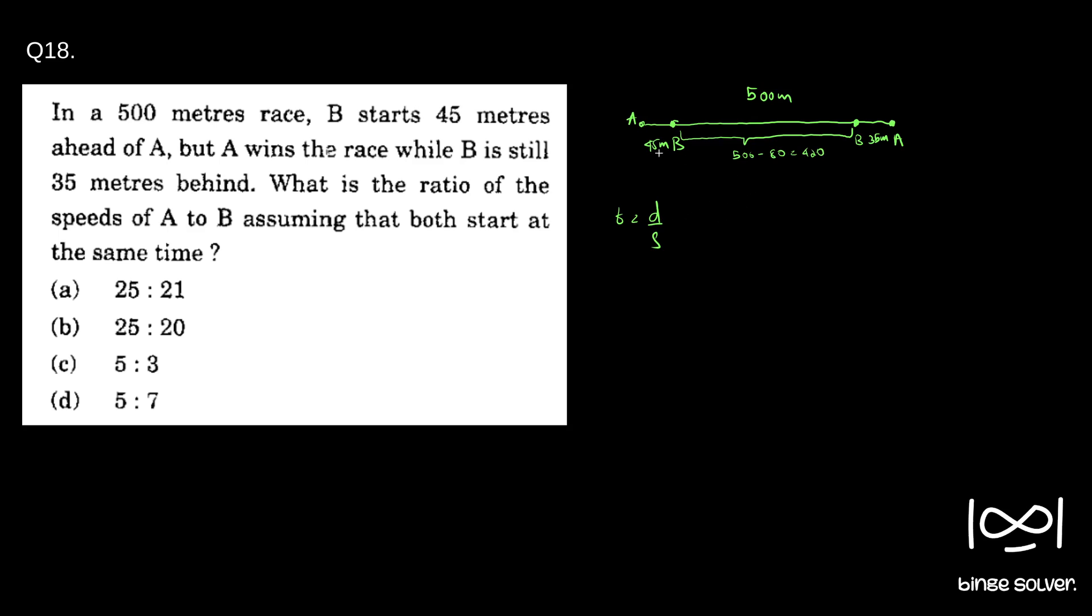So now we have the formula distance by speed. So we know that 500 by, let the speed of A be A, equals 420, the distance, by B's speed. So the question asks A to B. So A to B is 500 by 420, which is 50 by 42, or 25 by 21.